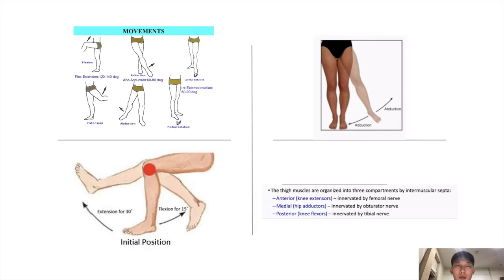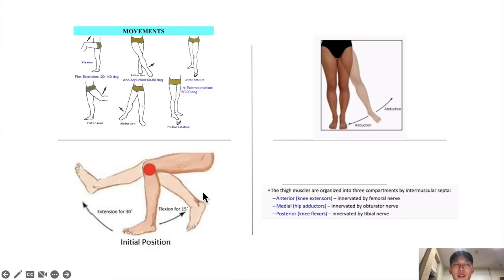The leg is comprised of three compartments: the anterior, the medial, and the posterior compartments. The anterior part, which is used to extend the knee, is innervated by the femoral nerve from L2 to L4. The medial thigh is used to adduct the hip and is innervated by the obturator nerve. The posterior thigh is innervated by the tibial nerve and is used to flex the knee.